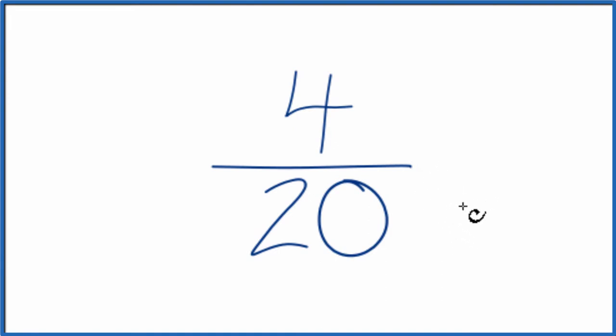To do that we're going to find the greatest common multiple, a number that goes into 4 and 20. So let's list the factors of 4 and 20.